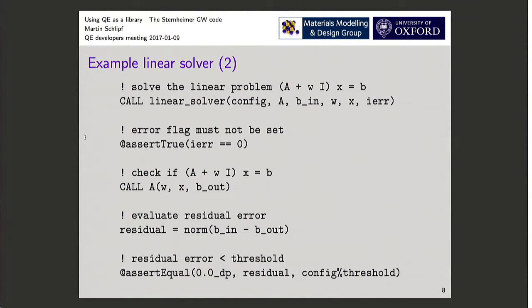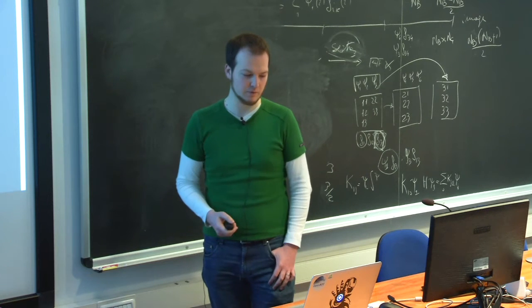You can see here, again, this is the additional statement coming from the test code. The rest is Fortran code. Then we check if we apply the linear operator, we get the same, testing the residual. And then the residual should be smaller than the threshold that we set for our solver.